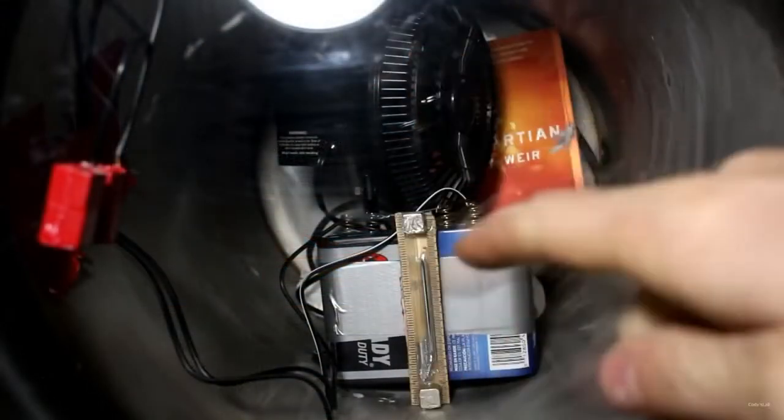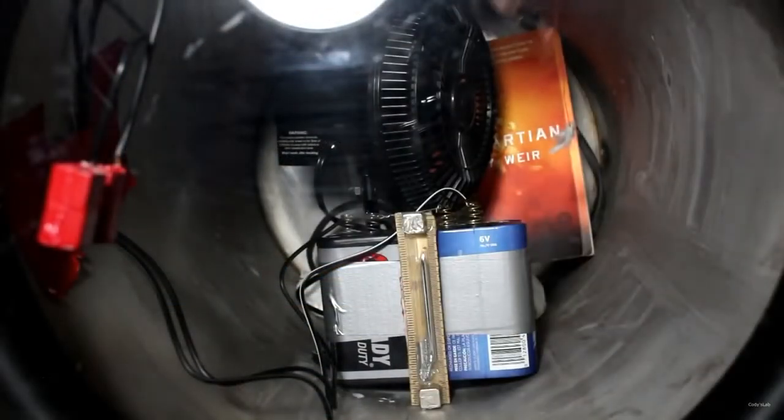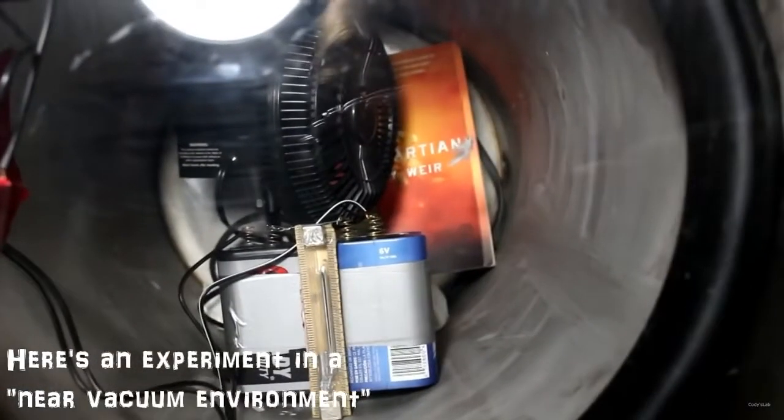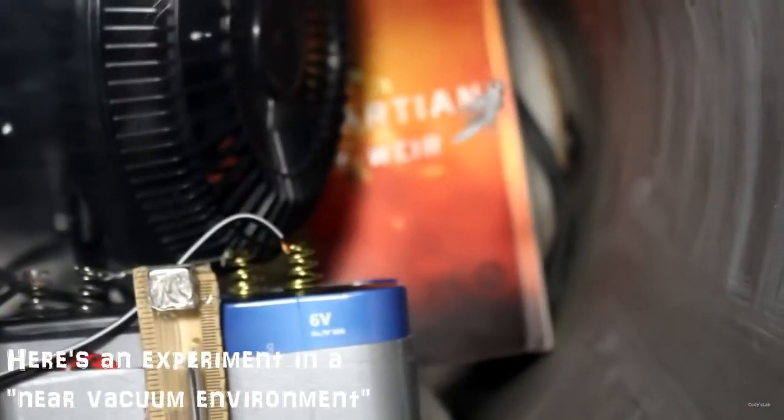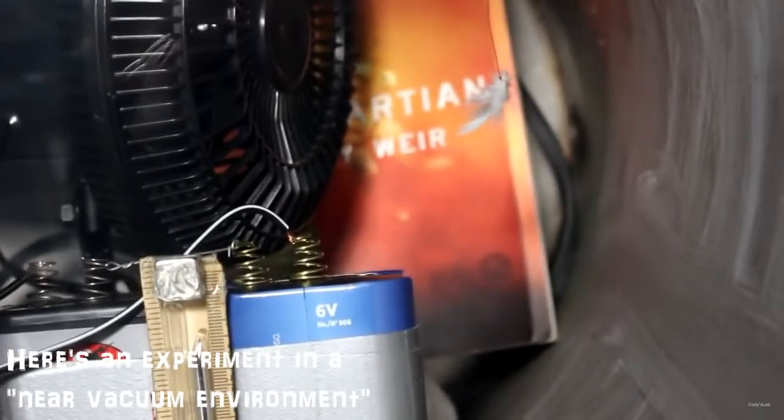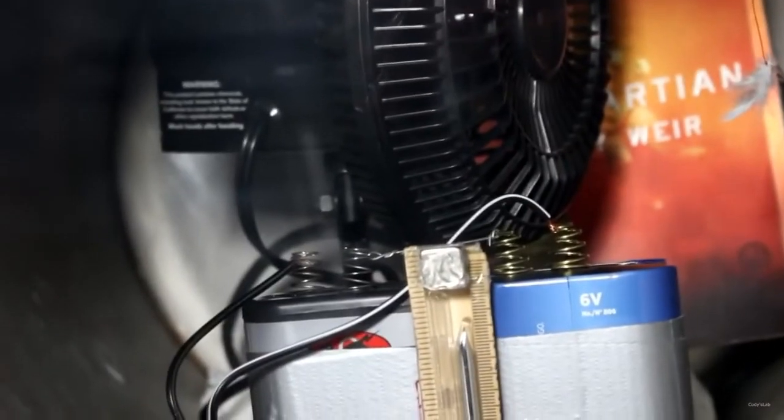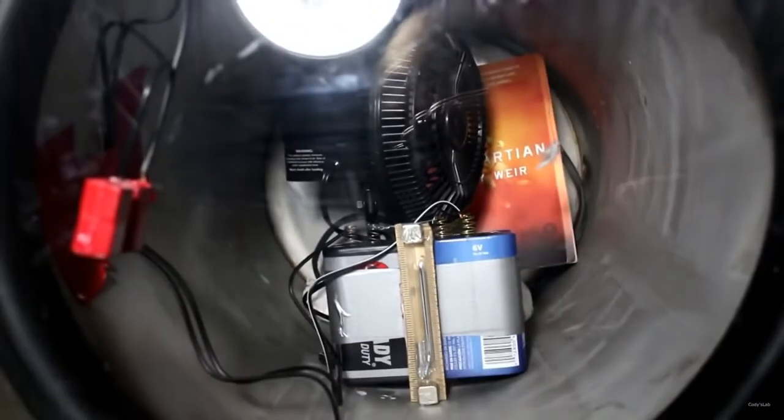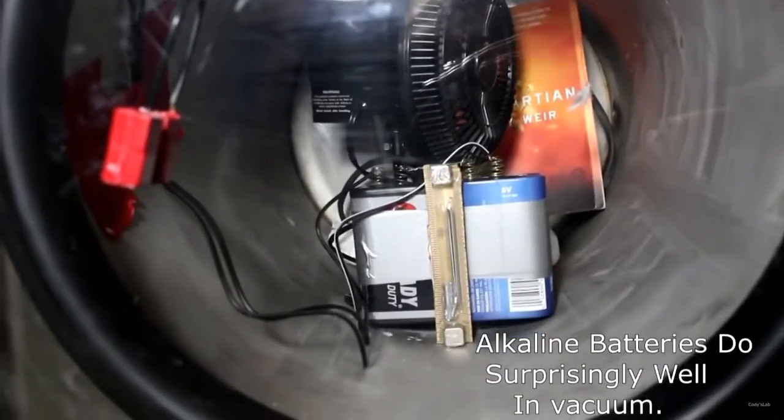Hi everyone, welcome back to Cody's Lab. So as you can see, we're using the vacuum chamber once again, and I actually have a little feather suspended in front of a 12-volt electric fan. I've got the batteries, a pressure gauge, and everything in there to turn it on with a little magnetically controlled tilt switch.